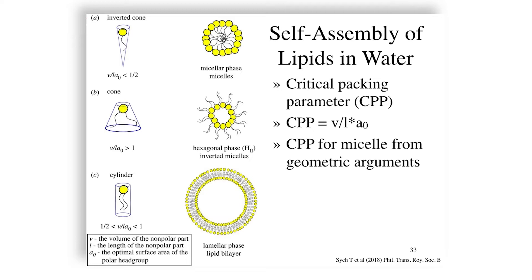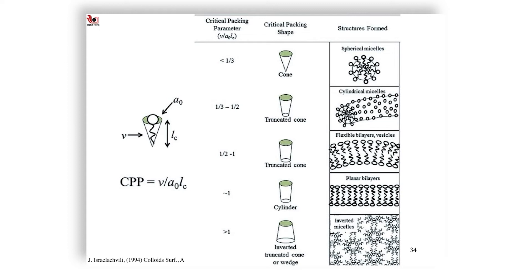We defined this parameter as v upon l by a0, where l is the tail length, the hydrophobic tail, a0 is the area of the surface head group, and v is the volume of the tail. In such a case, we said that micellar phases, hexagonal phases, and other phases can be shown geometrically to fall within certain ranges. So a conical lipid shape with a critical packing parameter of less than one-third will form spherical micelles, and a similar range of values between one-third and half will give you cylindrical micelles.